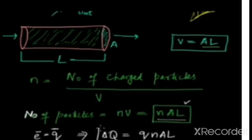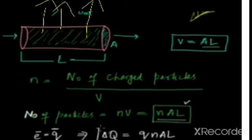We have to find out this expression. Here we have a magnetic field — what is the magnetic field, what is the direction of magnetic field? This is the perpendicular direction, this is the upward direction — this is the direction of the magnetic field, and this is the current-carrying conductor. The current is represented by capital letter I, which is equal to ΔQ divided by Δt.